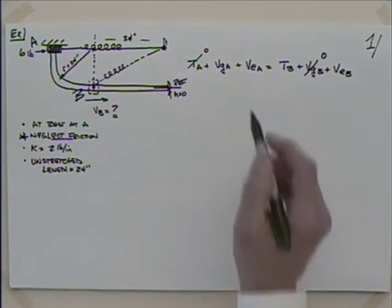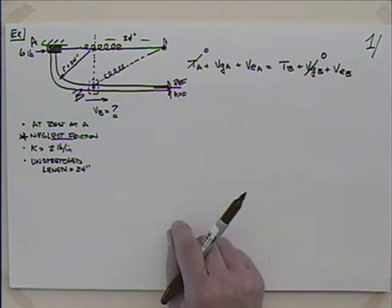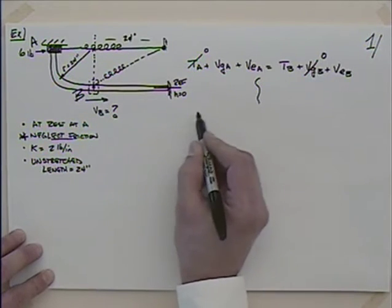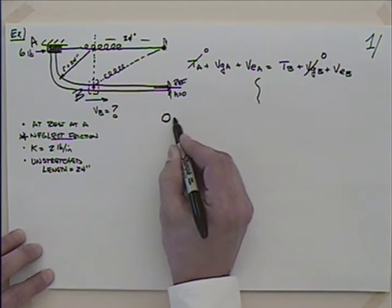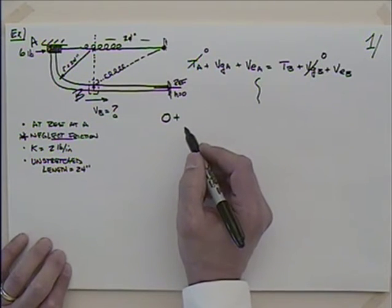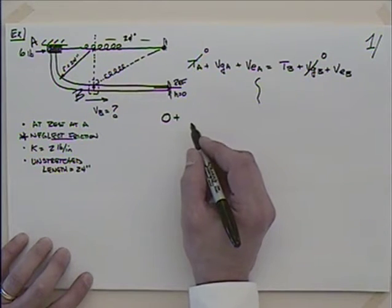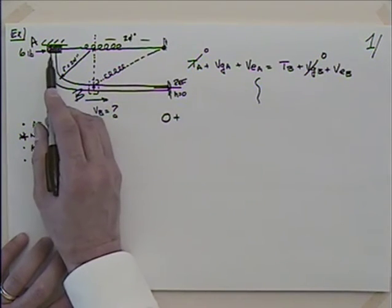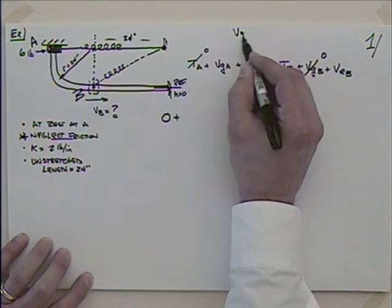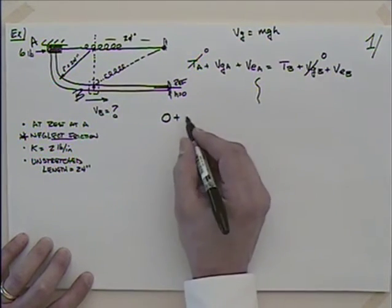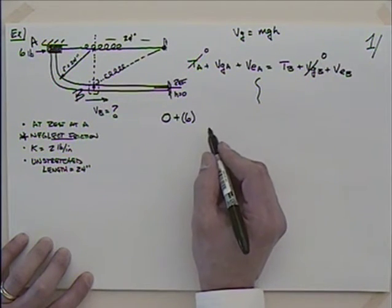So we're converting those potentials to kinetic energy plus still some spring energy. I'm going to have zero, plus the potential energy at A. Potential energy Vg is Mgh, so I'm going to have 6 pounds times the height, which is 24 inches.